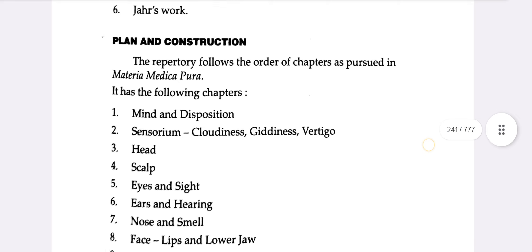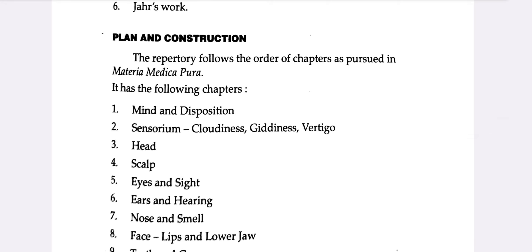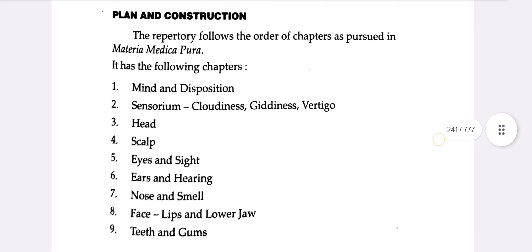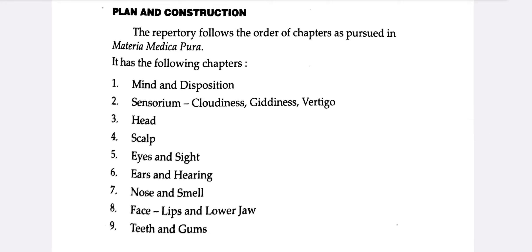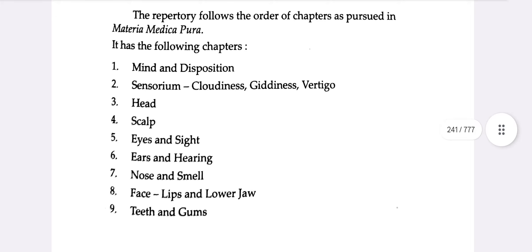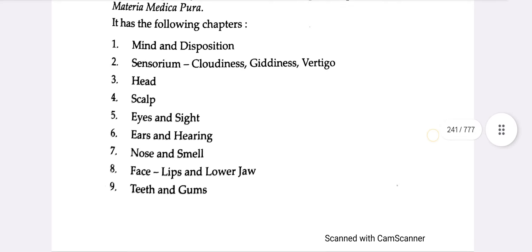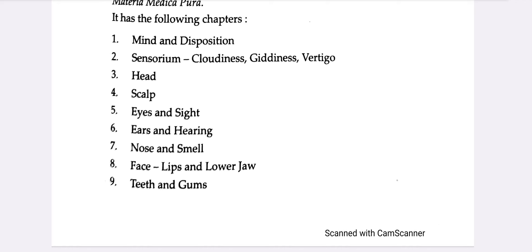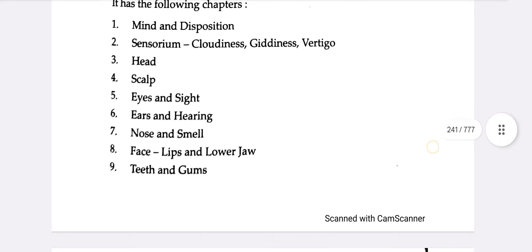The repertory includes a subtitle page. The second chapter covers Sensorium, the third chapter covers Head, the fourth covers Scalp, followed by Eyes and Sight, and then Hearing.